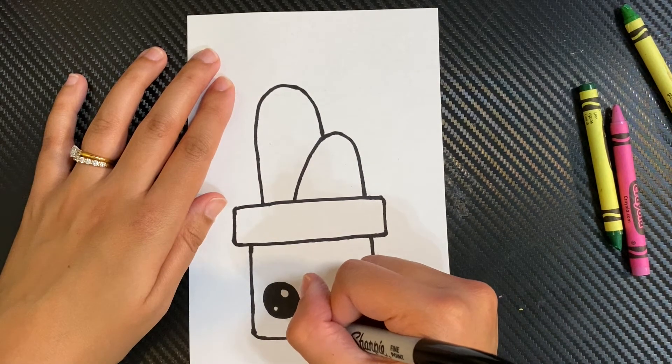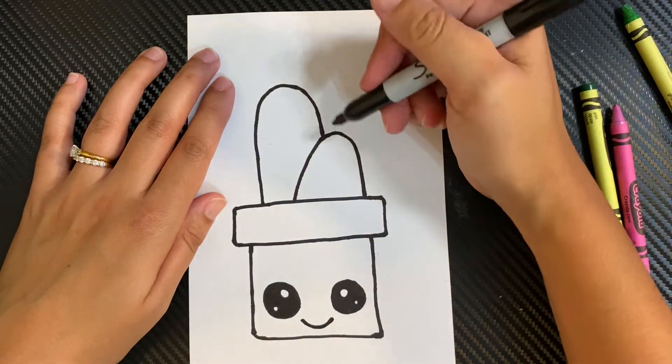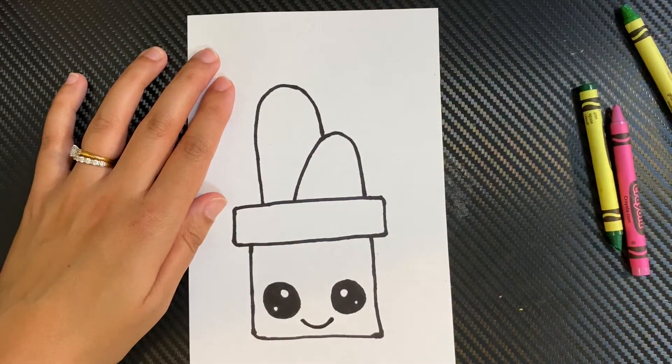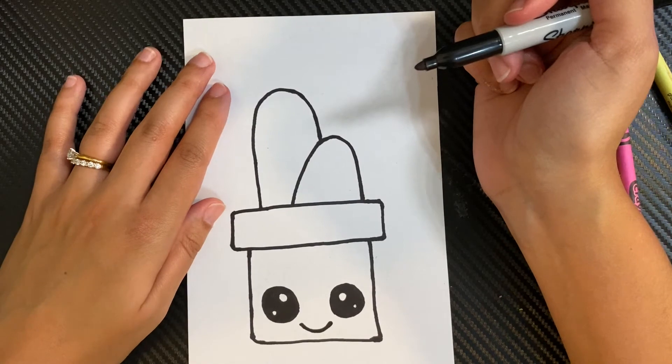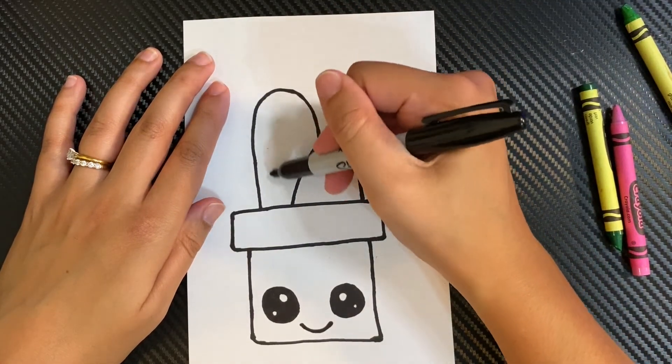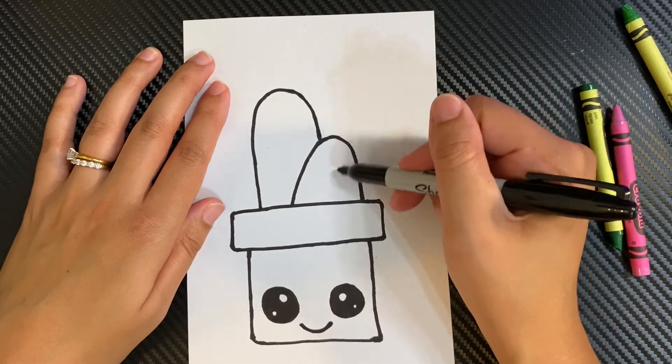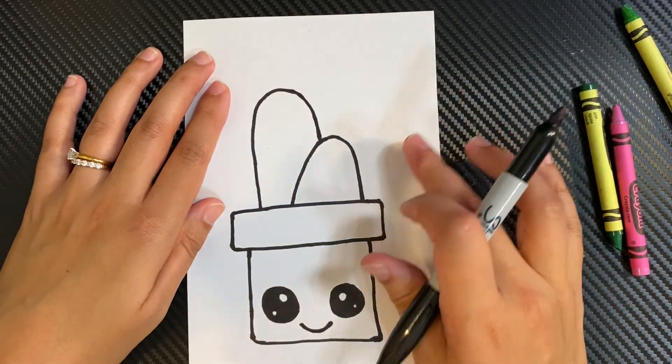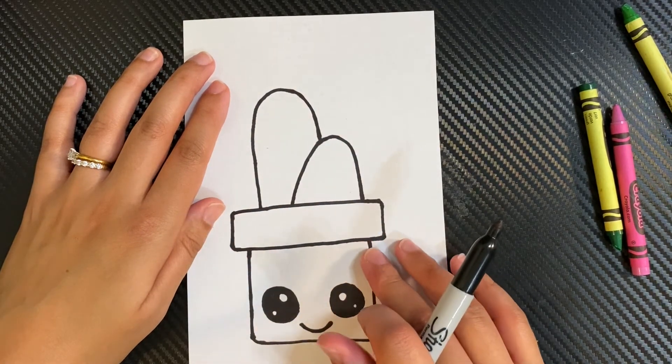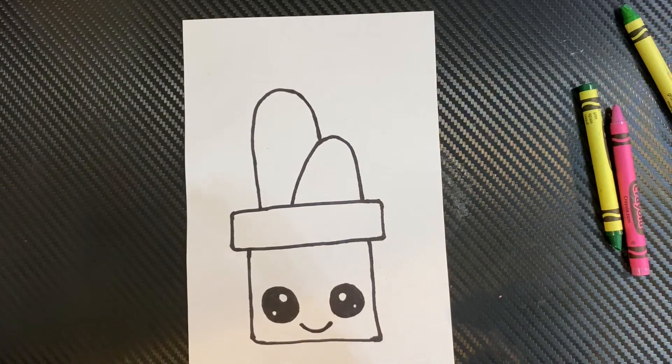We're going to have a smile. Now the cactus is becoming cute. Now I'm going to color it in. But before I color it in, I wanted to show you that I was going to make three lines going down on each cactus. And those are the marks of the cactus. So I'm going to fast forward the video and you can see my coloring.